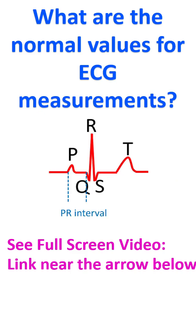Next is the PR interval, measured from the onset of the P wave to the onset of the QRS complex. The QRS complex is due to the electrical activity of the ventricles. The PR interval represents the time taken for electrical signals to conduct from the uppermost part of the atria to the beginning of the ventricles. Normal range of PR interval in an adult is 0.12 to 0.2 seconds, and it decreases as heart rate increases.